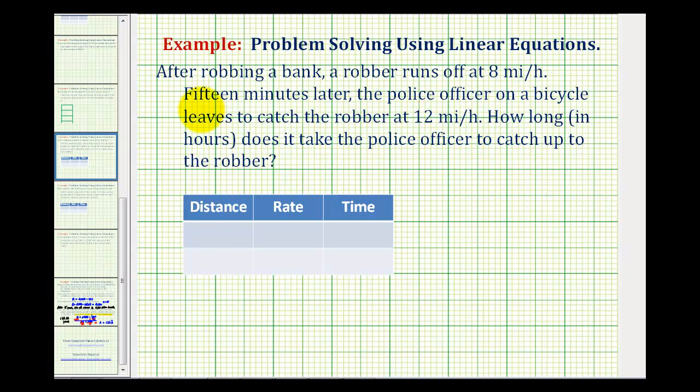So this problem involves the formula distance equals rate times time. We're going to record all the information we can in this table, where this first row is going to be the information about the robber, and the second row will be the information about the police officer.